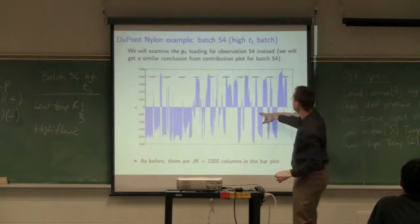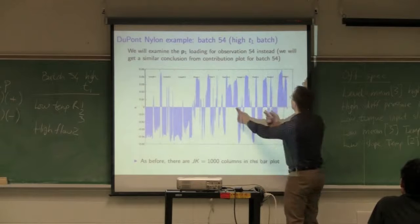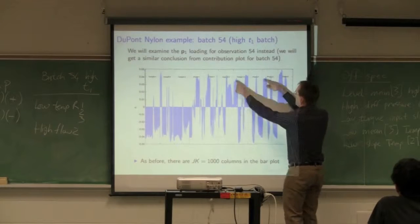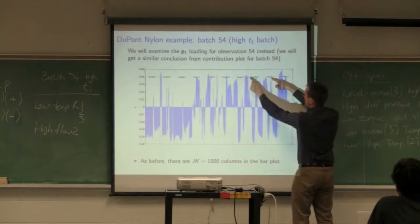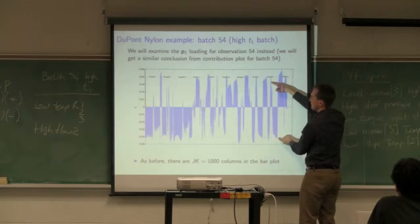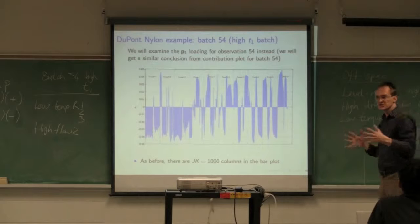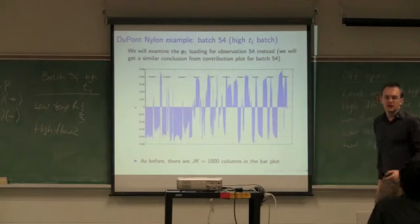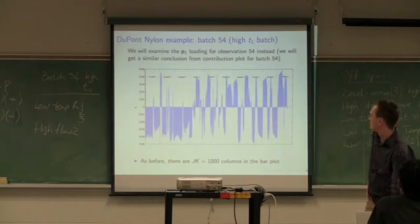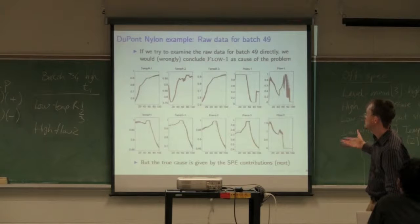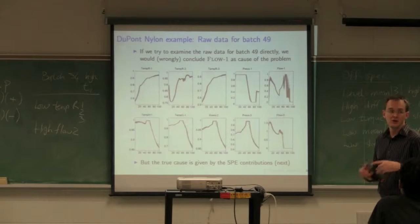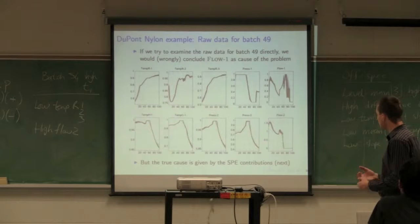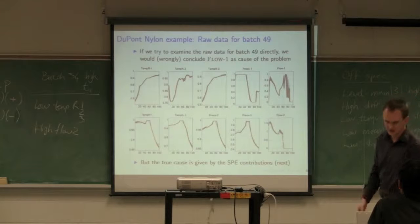We can also see temperature C1 and pressure C3 - notice how they go together. They go high, then low, then high, but then there's a change. Temperature C1 stays high for the rest of the batch while pressure C3 goes back low. The correlation structure stays the same and then deviates towards the end. That's what I mean by strong change in correlation structure.